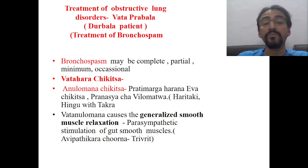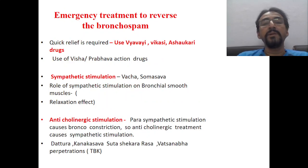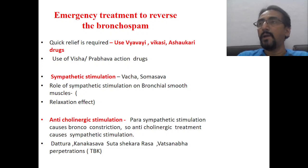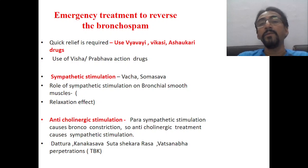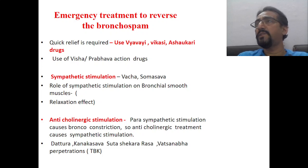Vata anulomana causes generalized smooth muscle relaxation or parasympathetic stimulation of gut smooth muscles, so trivrit or avipathikara churna may be helpful. For emergency treatment to reverse bronchospasm, we need very quickly acting drugs — vibhavi vikasi and ashukari guna yukta drugs. Such properties are found in visha and upavisha drugs, and those acting by prabhava. Bronchial smooth muscles are constricted, and to revert this we need to find drugs that are sympathomimetic in action.